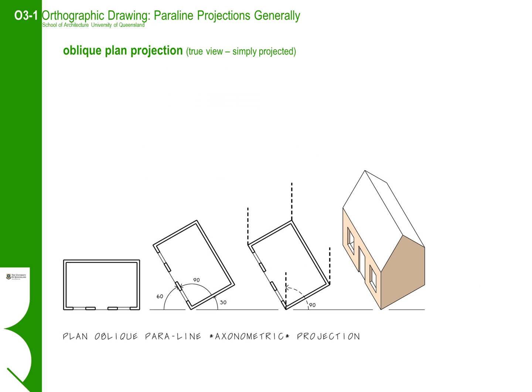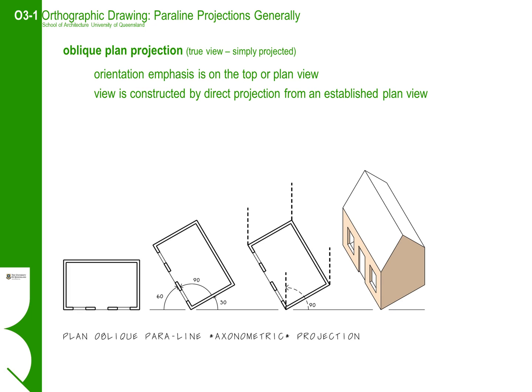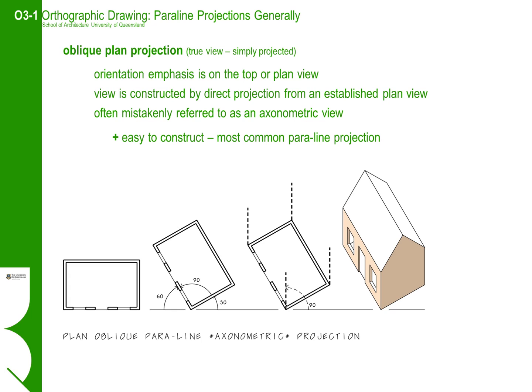The second family of paraline projections are the oblique projections. The plan oblique paraline drawing, or axonometric, is perhaps the most widely used projection, as it is fast to construct — the plan view is true and so can be traced directly. A plan oblique can be characterised by the emphasis on the top or plan view, and is usually always constructed by projecting vertically from a rotated plan view. The plan oblique is often mistakenly called an axonometric view, so most times when someone asks for an axonometric, what they usually mean is an oblique plan projection. The main plus points are that they are easy to construct and very useful for producing diagrammatic representations of objects and buildings. However, some people find them difficult to read, as the right angle in the plan can often trick your perception and in some cases makes reading the drawing almost impossible.